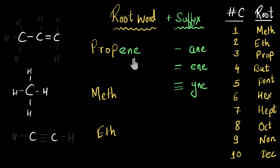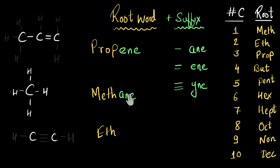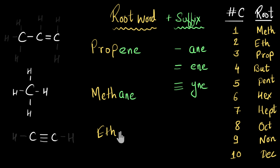For the first molecule, focusing on the bonds between carbon atoms, there is one double bond, so this belongs to the alkene family and takes the suffix '-ene', giving the name 'propene'. The second example has only one carbon atom — you need a minimum of two carbon atoms for alkenes or alkynes, so this must be an alkane, giving the name 'methane'. The third example has a triple bond between the carbon atoms, so it belongs to the alkyne family with suffix '-yne', giving the name 'ethyne'.